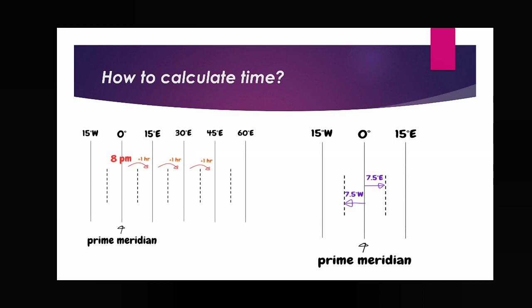Here is a small practice problem: zero degree is 8 PM. What is the time at 15 degrees east? The difference is 15 degrees. Since one degree equals 4 minutes, 15 degrees equals 15 multiplied by 4, which is 60 minutes — that is 1 hour time difference. If 8 PM is on zero degree, what will the time be on 15 degrees east, 30 degrees east, and 45 degrees east?